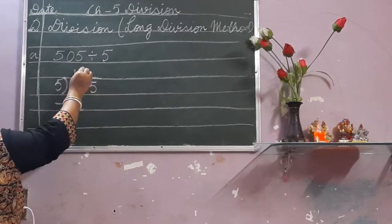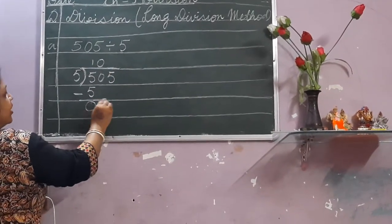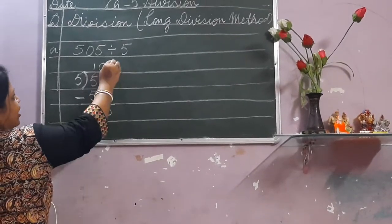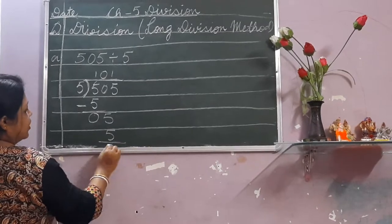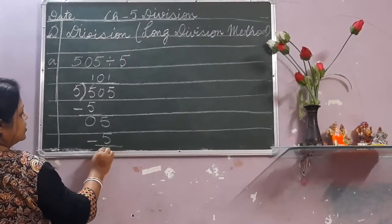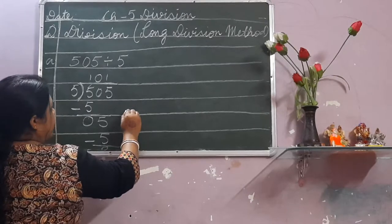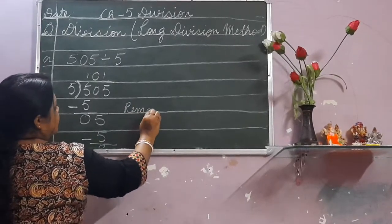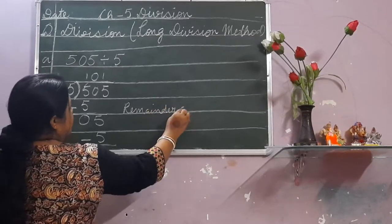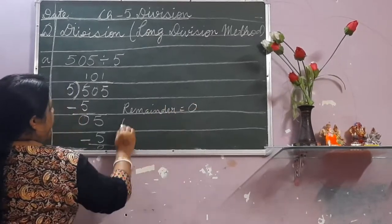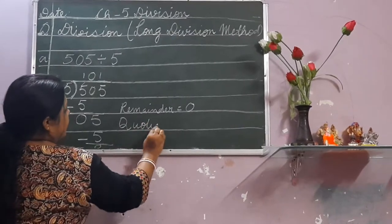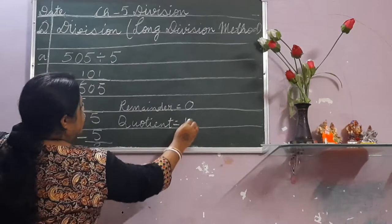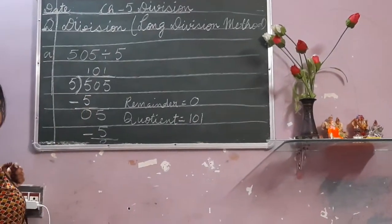When you have subtracted, it comes to 0. This 0 will go up — nothing will be written here. Then bring down 5. Again, 5 ones are 5; minus sign; result is 0. Beside you can write: Remainder equals 0. And Quotient equals 1, 0, 1. This is your answer.